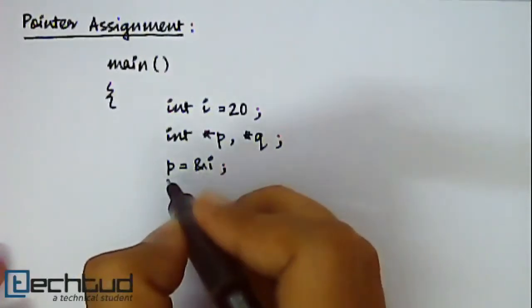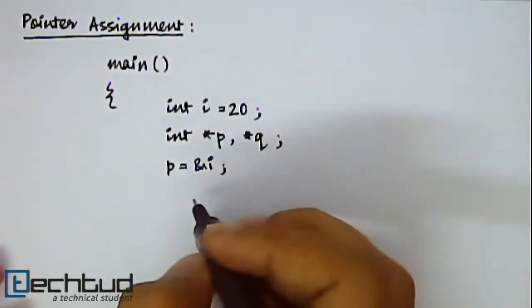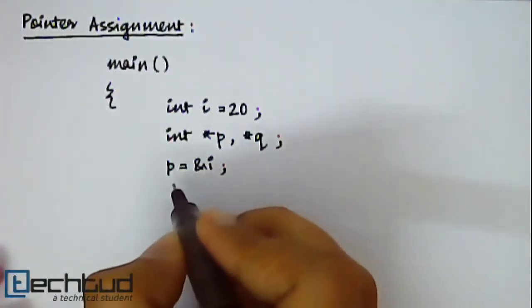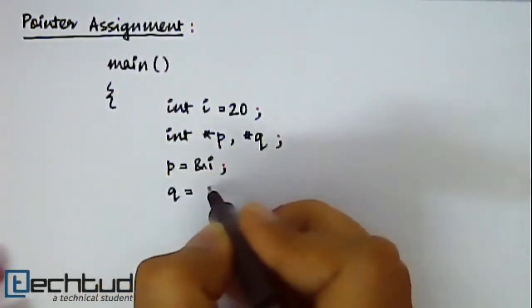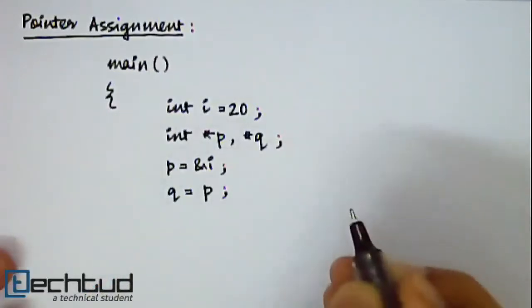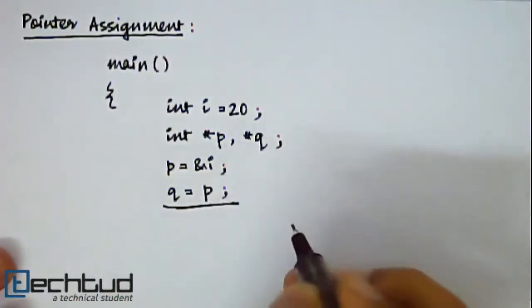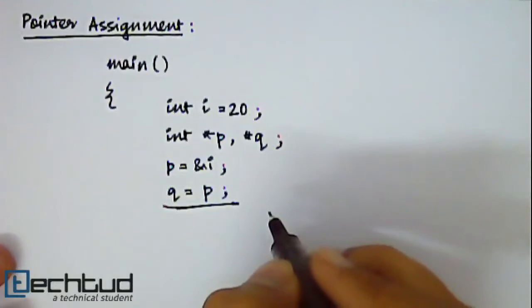Now if you want to store the same address inside q, you need not write this similar statement again. You can directly assign the value of p inside q. So this statement is an example of pointer assignment.